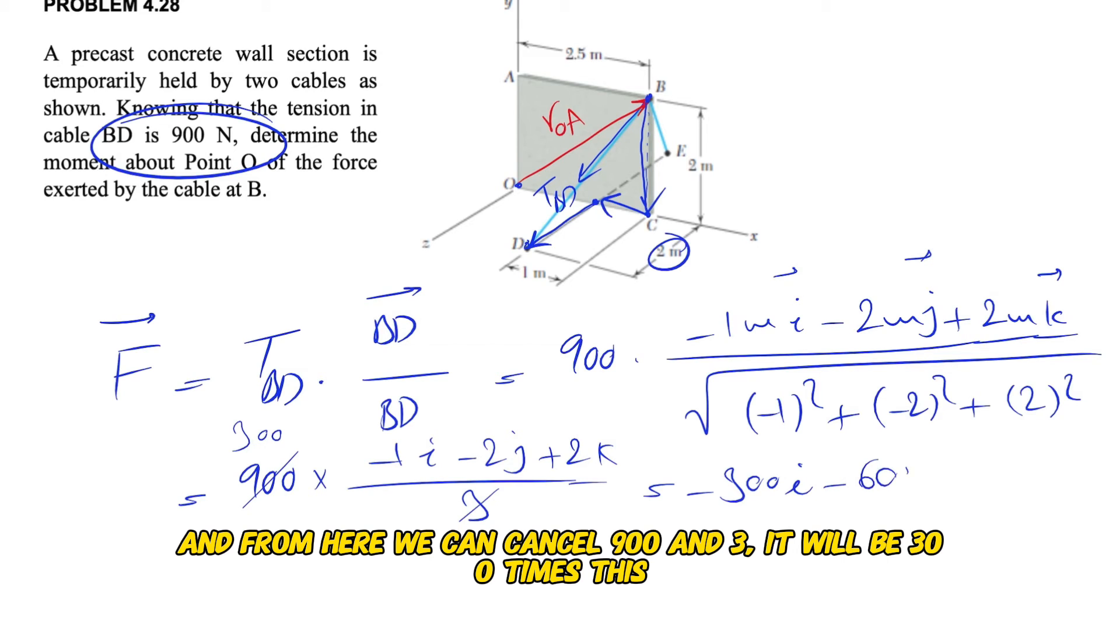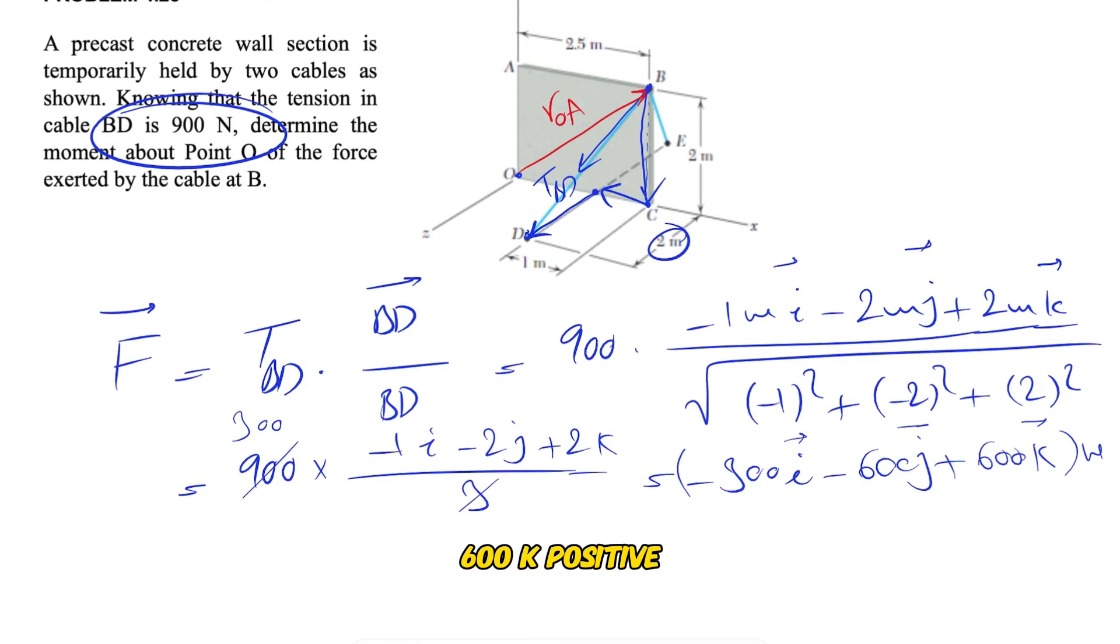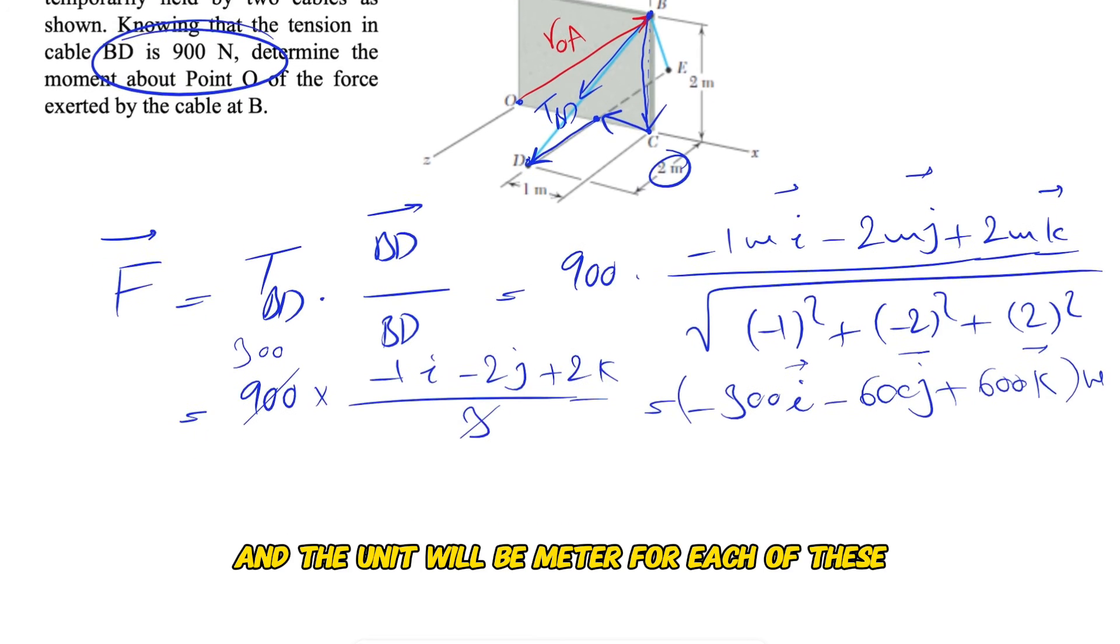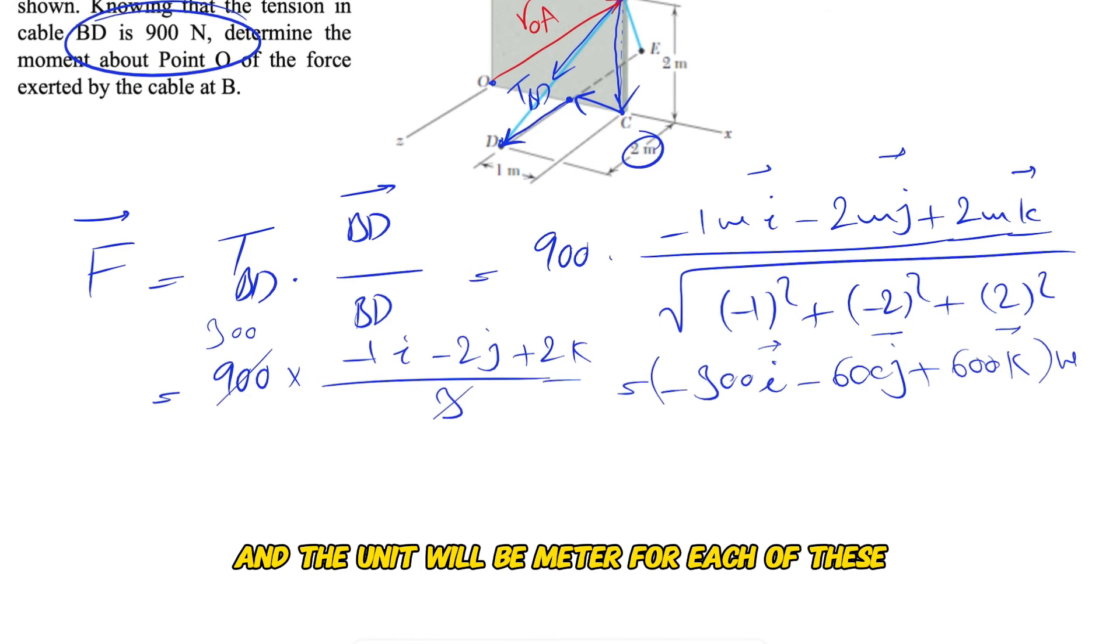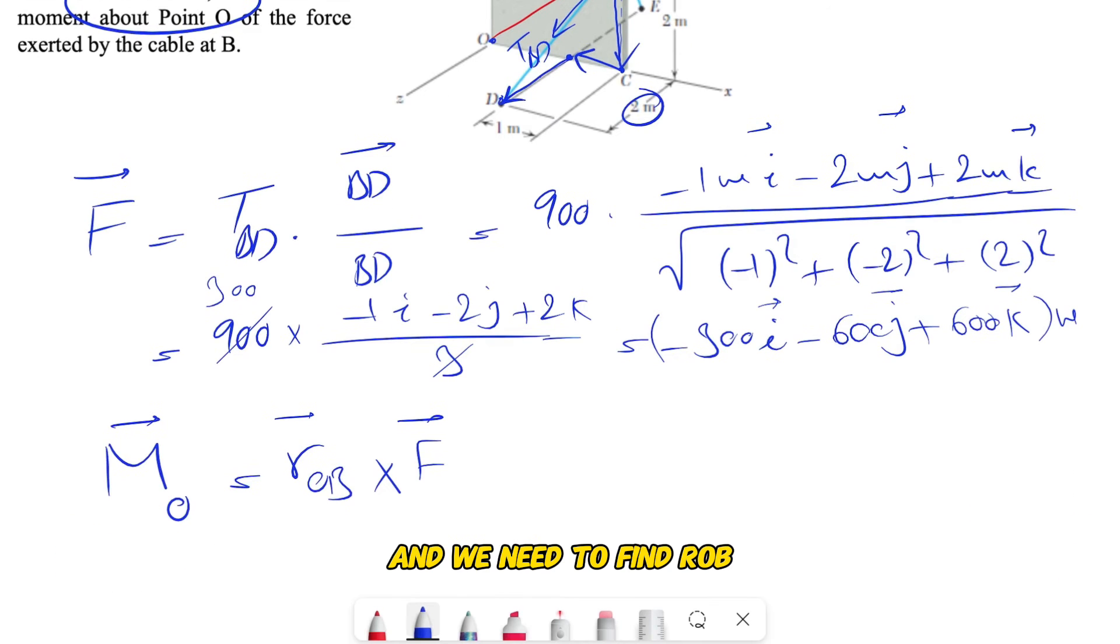From here we can cancel 900 and 3, giving us 300 times this, which will be -300i - 600j + 600k, and the unit will be Newtons for each of these.